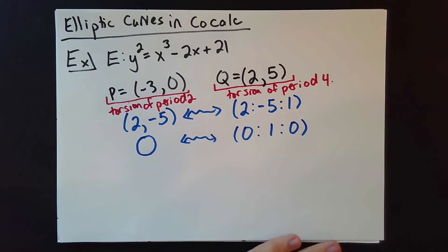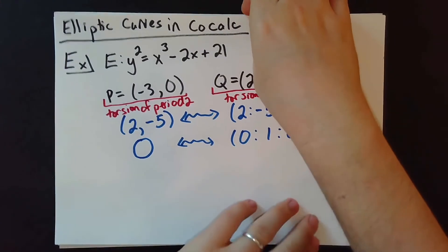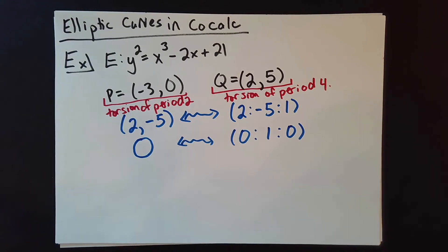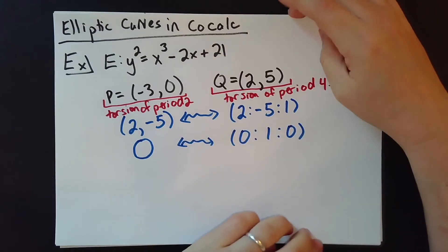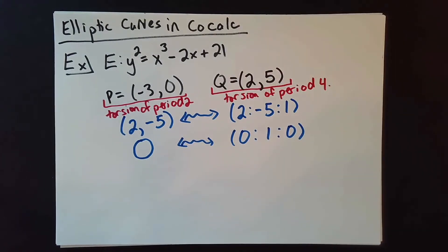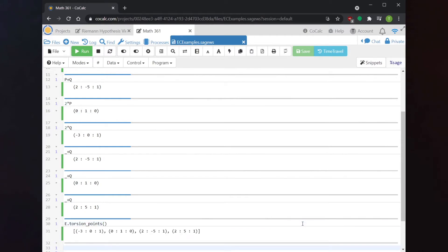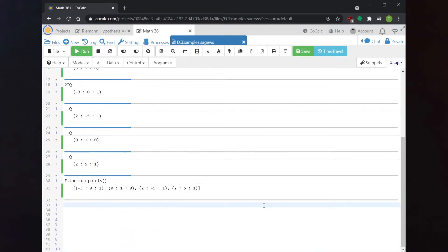We might naturally wonder if there are any other torsion points on the curve. Fortunately, Sage can do that for us. This is something we explained algorithmically using the Nagell-Lutz theorem and the rational root theorem, but Sage can do it for us. We just ask Sage for the torsion points of E and it spits out a list. It turns out we've already found all of the torsion points of our curve.